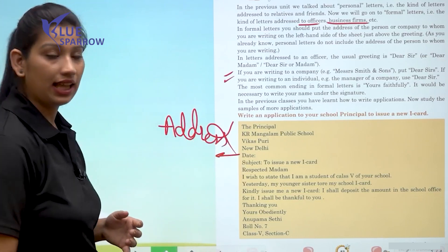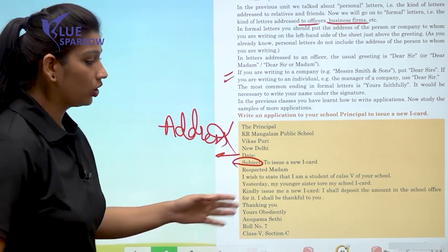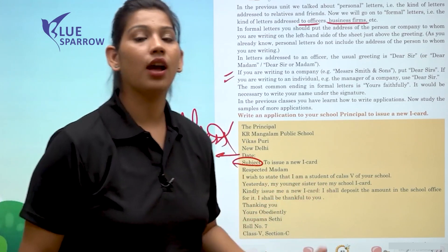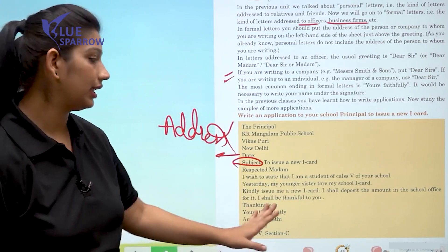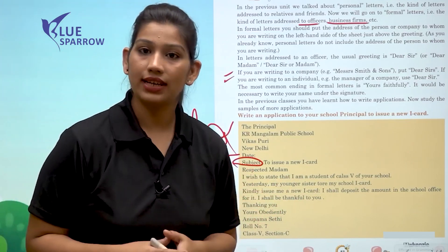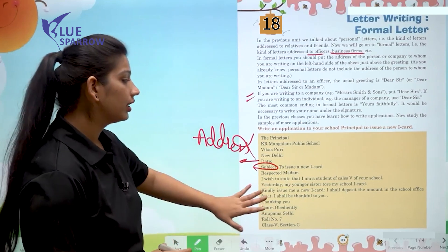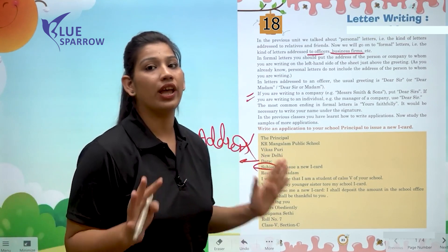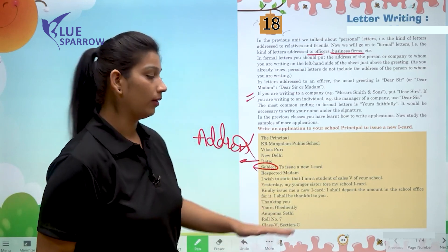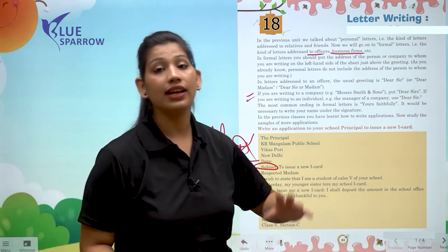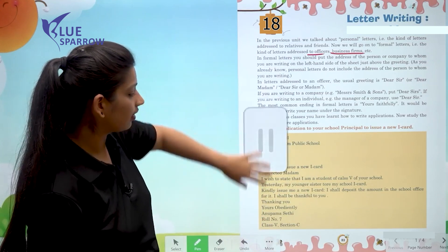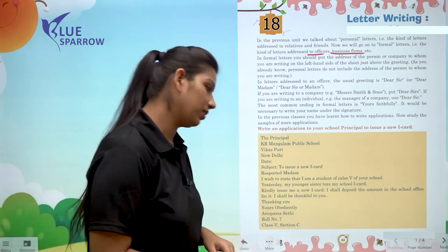Then you write the date, and then comes the new element — the subject. For example: 'To issue a new I-card.' The subject line gives the reader the key information right away. They may read further to understand why you need it. You give an explanation in the body, but the subject must be stated in one line.